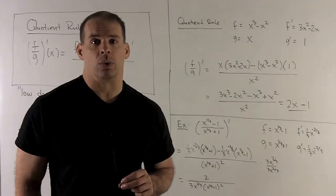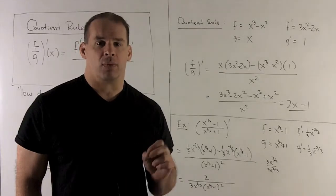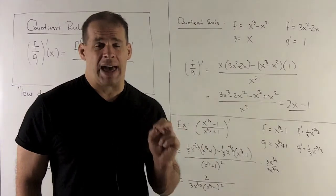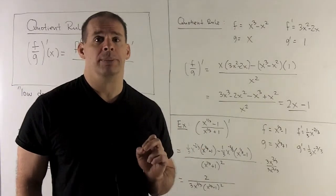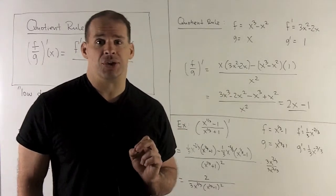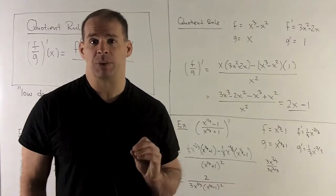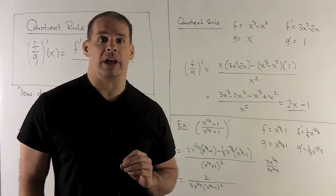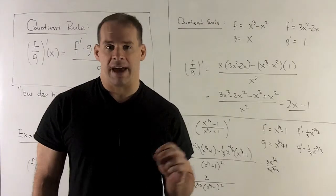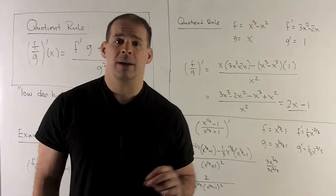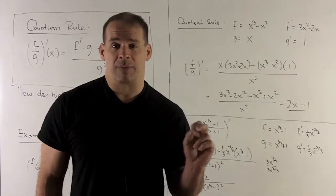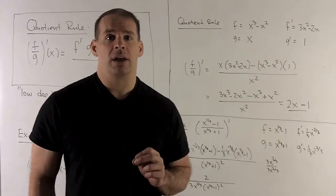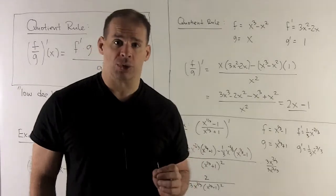Now let's look at that same example using the quotient rule. I'll write out f and g, along with f prime and g prime, for clean bookkeeping so I can carefully substitute into the formula. Our f is x³ - x², our g is x, f prime is 3x² - 2x, and g prime is 1. One point of trouble is going to be the minus sign in the numerator.